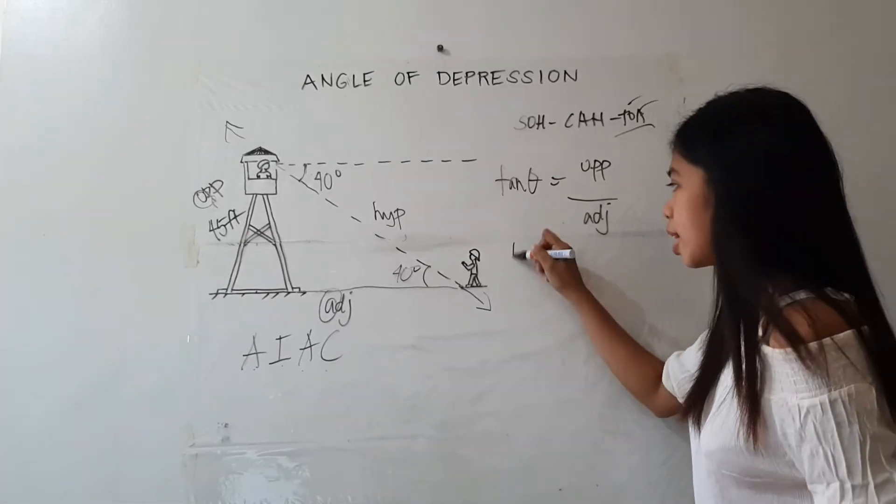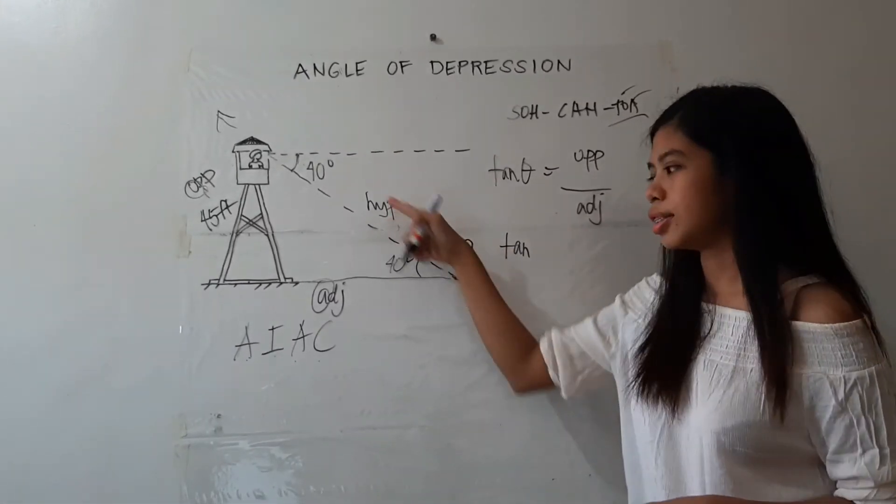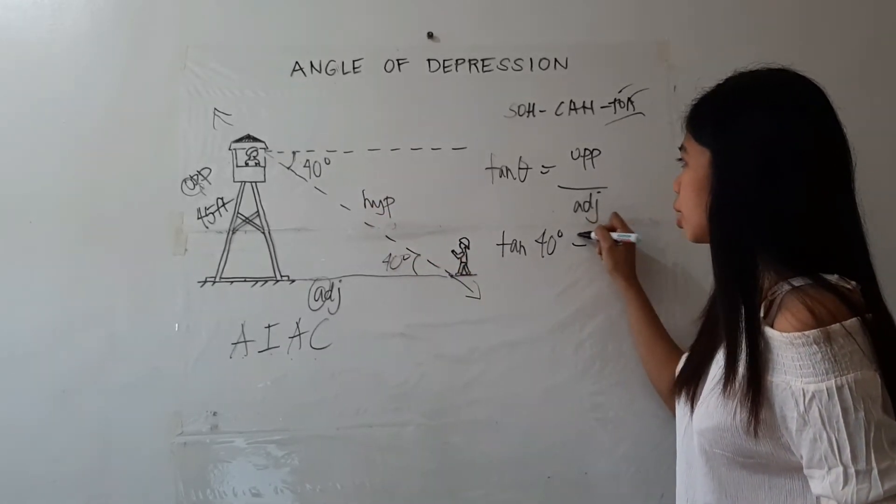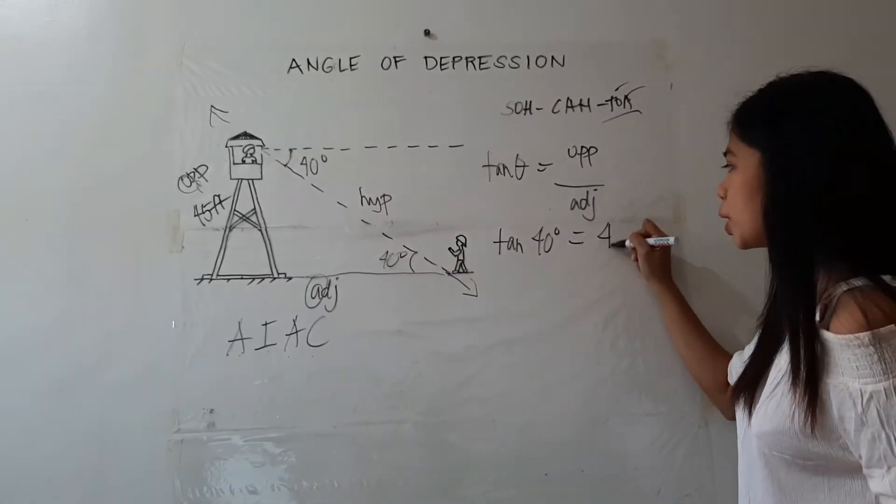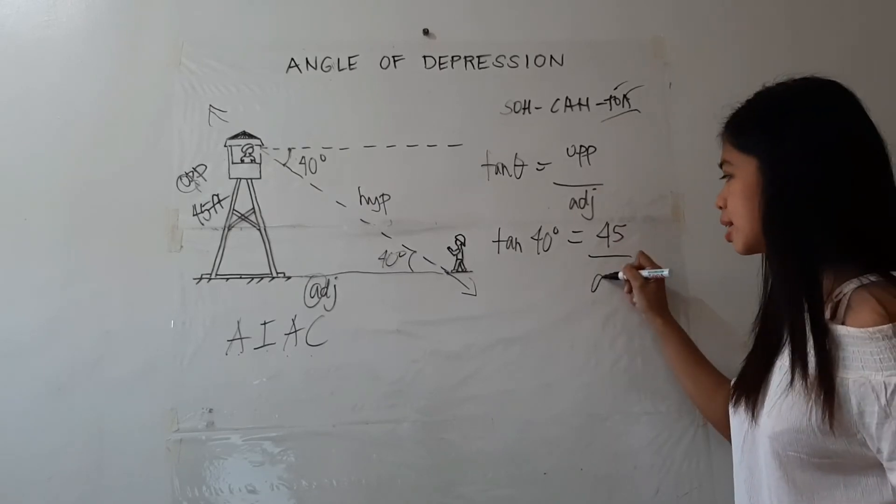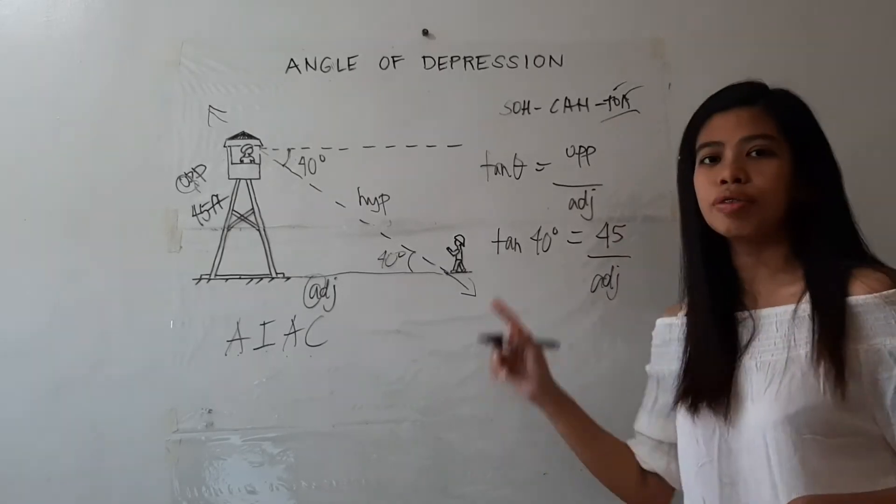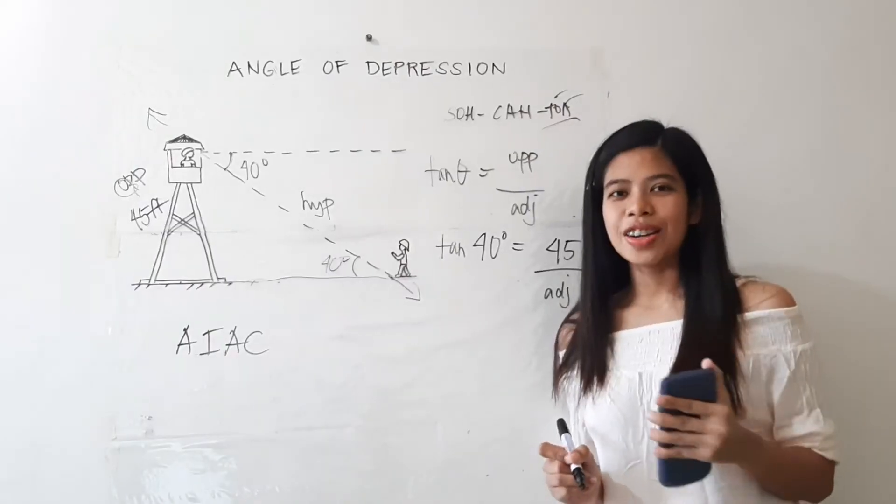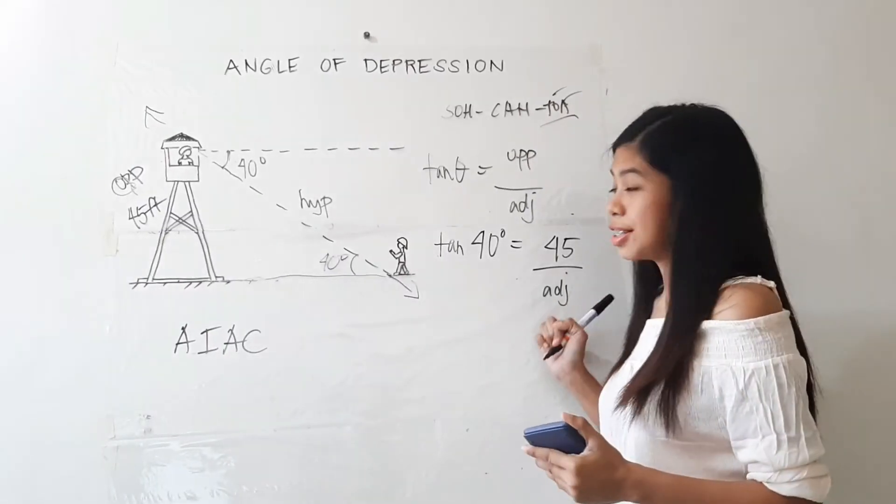And again, the theta now is the alternate interior angle, which is 40 degrees, equals the opposite side, 45, over the adjacent side, which is the distance from the forest ranger's partner to the base of the tower. Alright, let us now solve for the adjacent side.